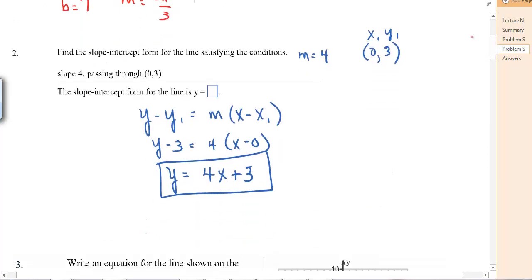On number 2, find the slope-intercept form for the line containing the following conditions. Slope of 4, and here's your point, 0, 3. So we use our point-slope form and plug in the parts. y minus 3 equals 4 times x minus 0. So that's y equals 4x, and I added the 3 to the other side.